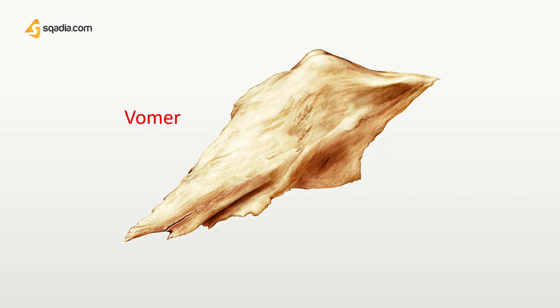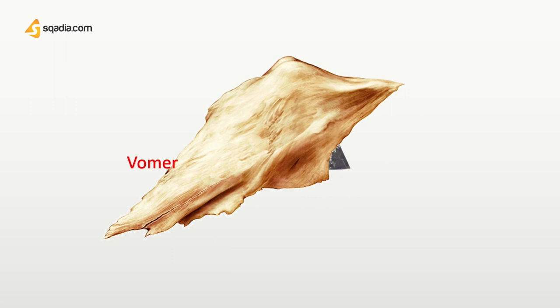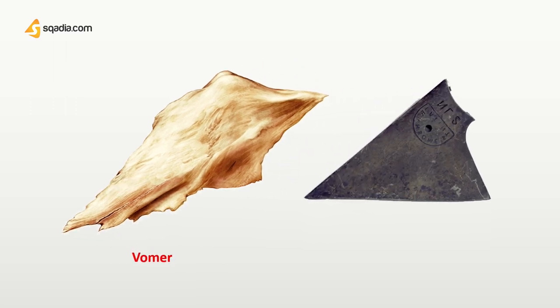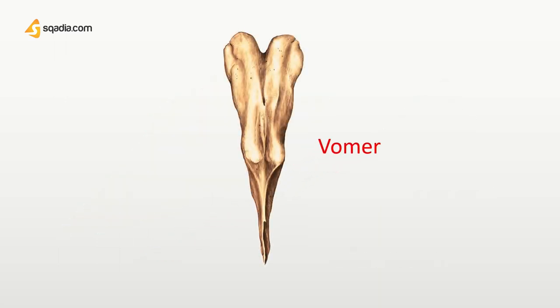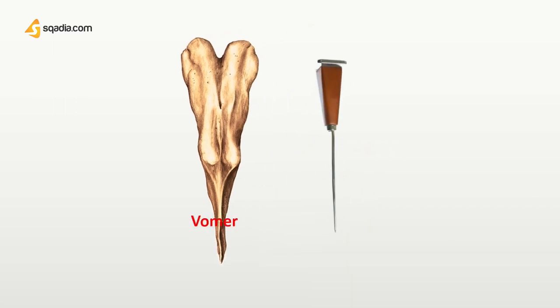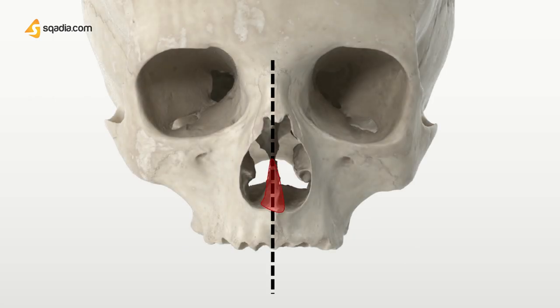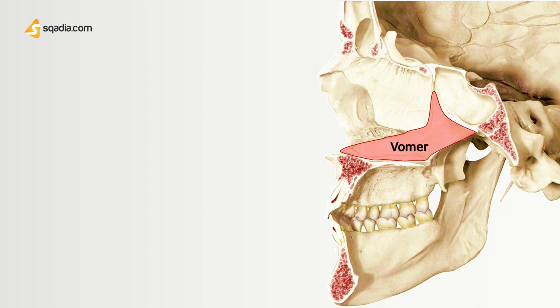If you look at the vomer, it is a small triangular bone and looks like a plowshare. This is the reason for calling it vomer — it is a Latin word meaning plowshare. Now, if you look at it from the anterior side, it is a small needle-shaped bone which looks like an elongated heart or an ice pick. The vomer is located in the mid-sagittal line and it runs obliquely in an anterior and inferior direction. Because of its location, it articulates with other facial bones.